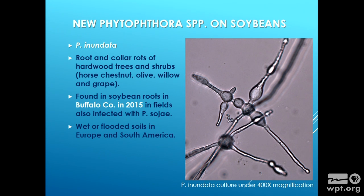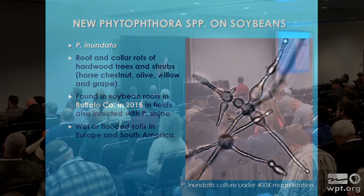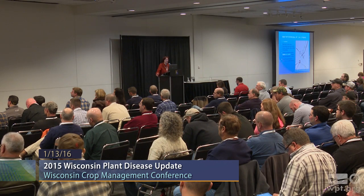This particular one we found this year in Buffalo County. It's really known to affect hardwood trees and shrubs, and not so much soybeans — that's a new one. A lot of these new species have in common that they are found on wet and flooded soils. The finds we have are homologous with finds from Europe and South America. That doesn't mean they're brand new here — we have new methods and they may have been here for a while. But when we have flooding in soybeans and wet years, that might be why we start to find them.